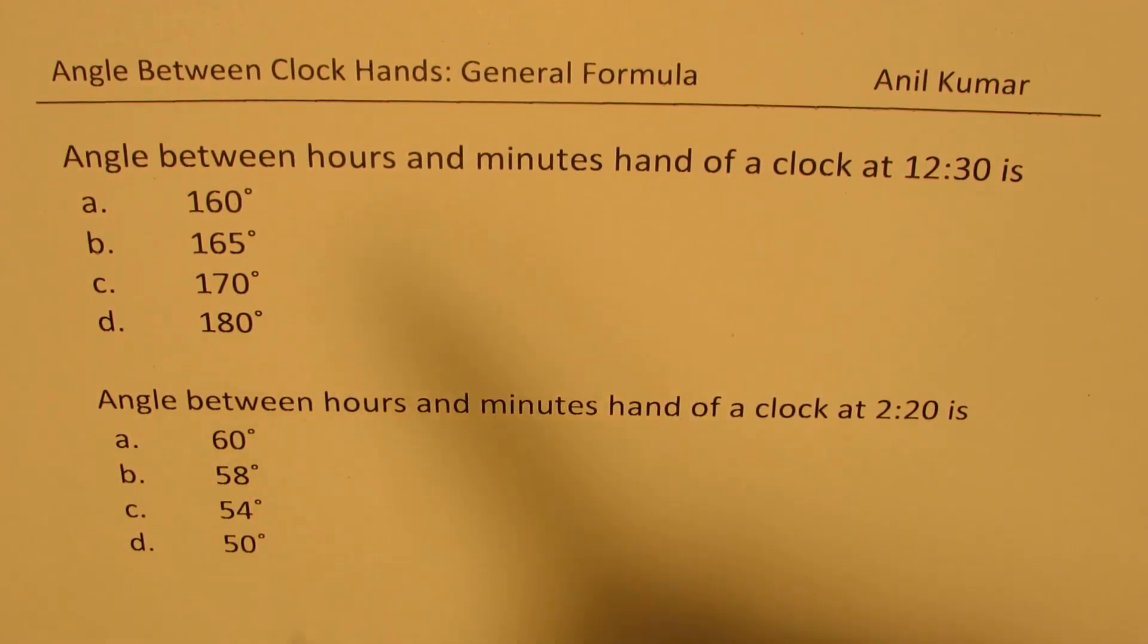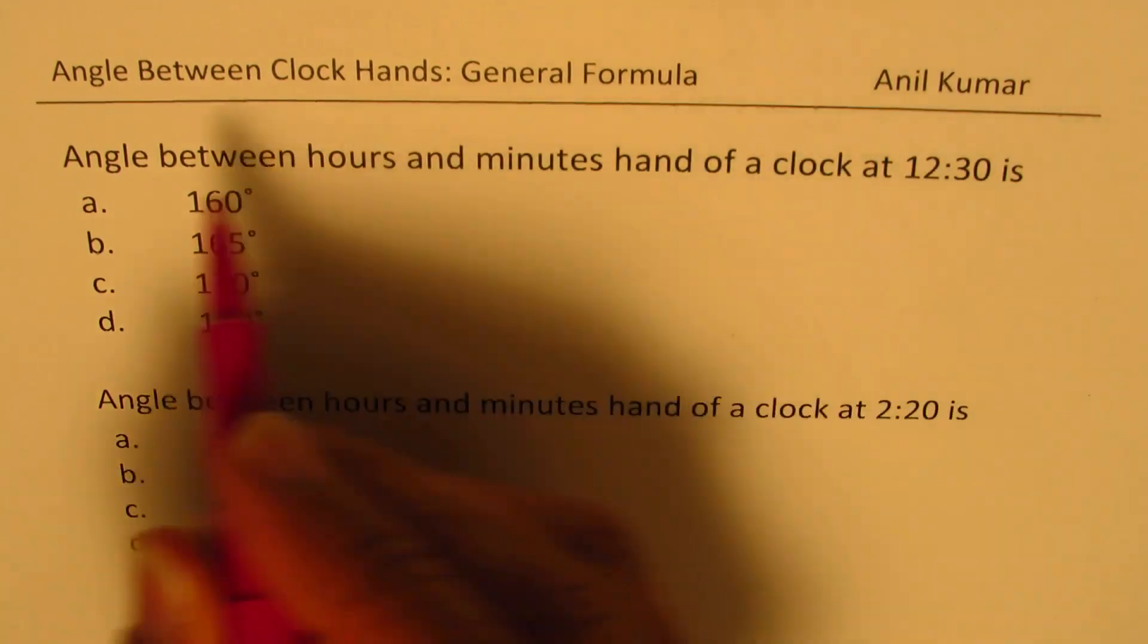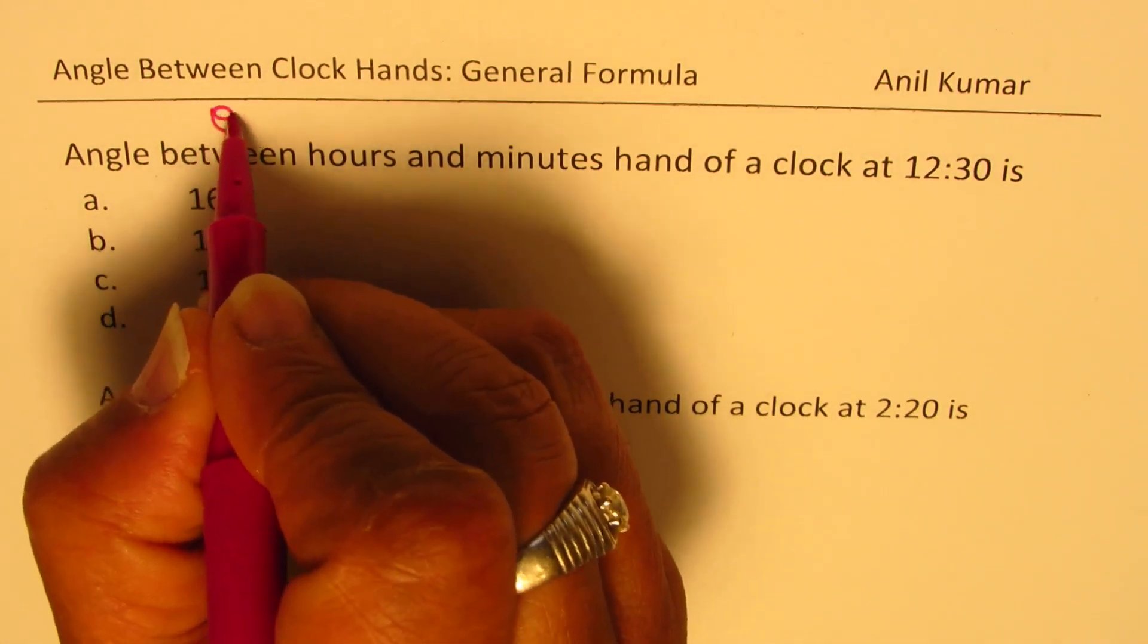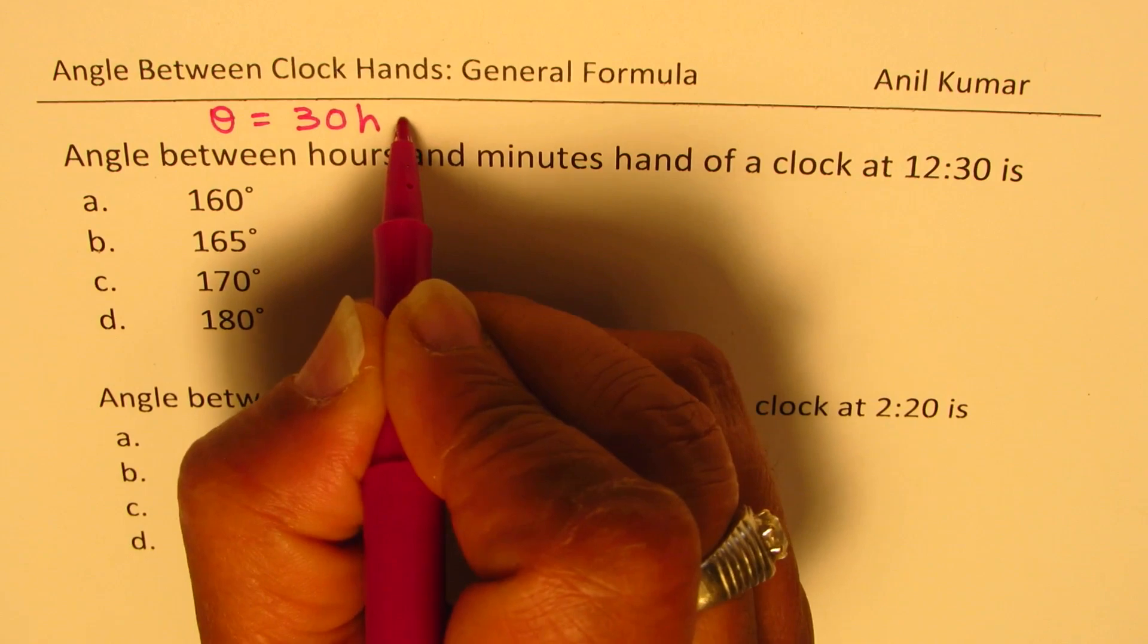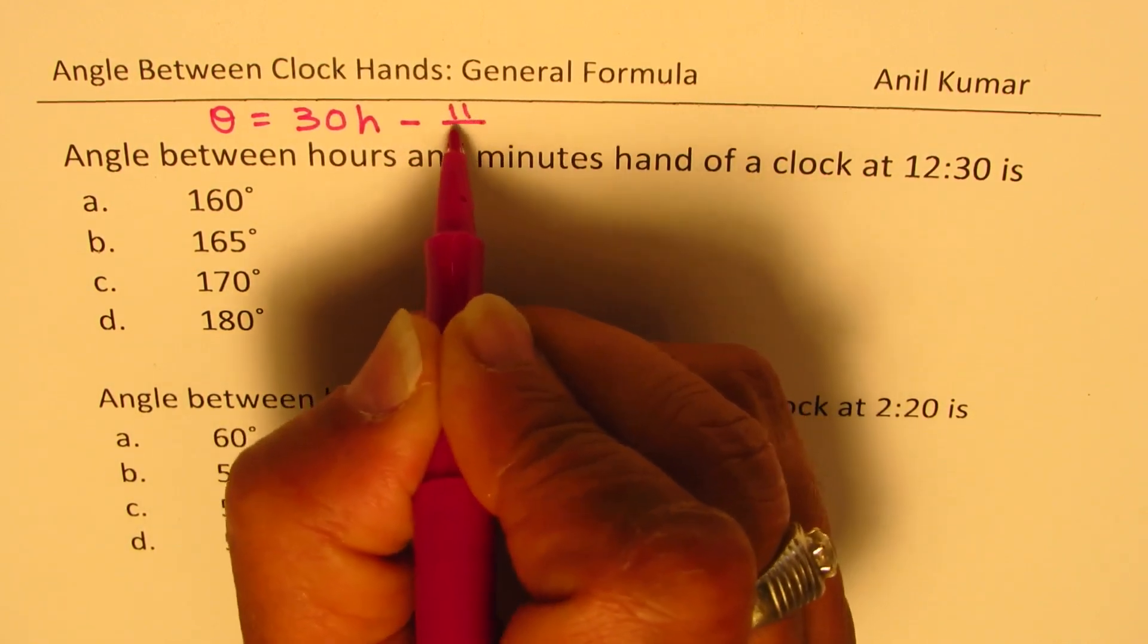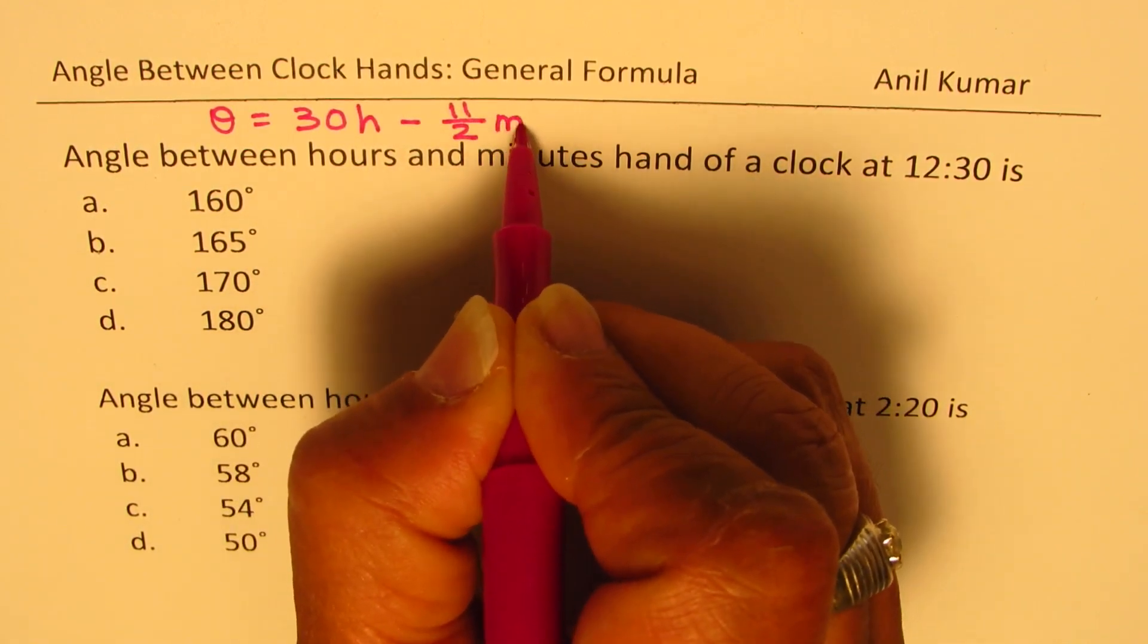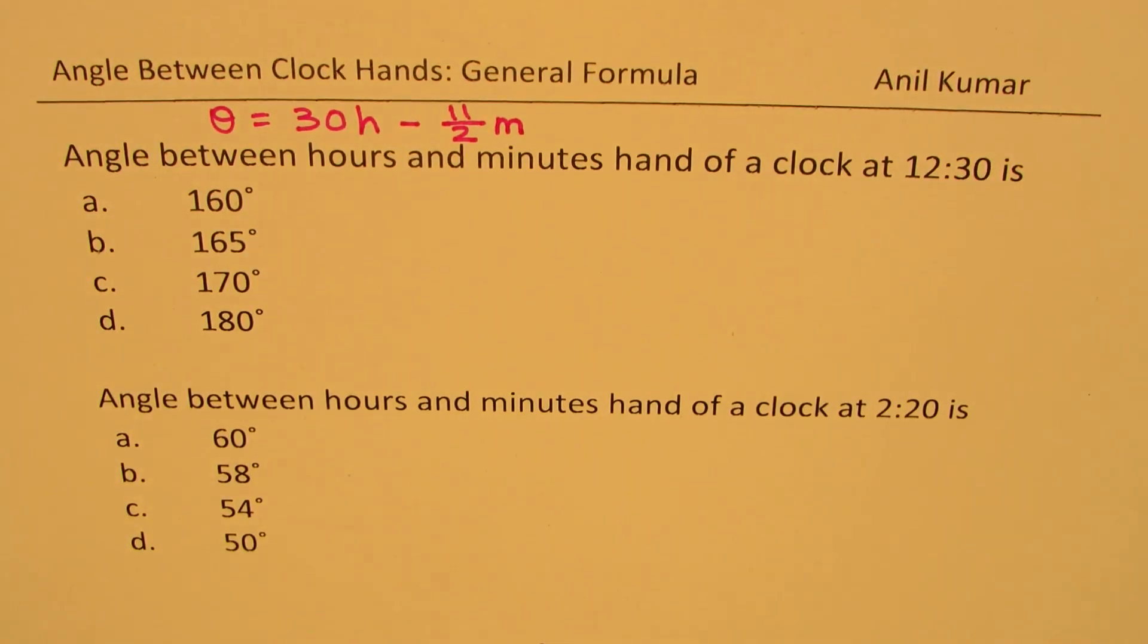Let me give you the general formula first as many students are only interested in the formula. So the formula for angle is theta equals to 30 times the number of hours minus 11 by 2 times the number of minutes. So that is the formula.